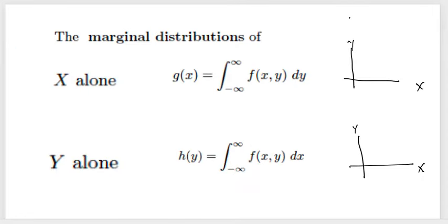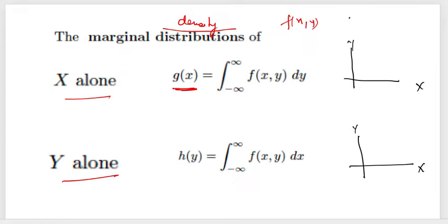The second concept is the marginal distribution — sometimes called the marginal density function — for x alone and y alone. Though we are working with a function of two variables, if we want to write a function of x variable only, we integrate the joint density function over all values of y, from minus infinity to plus infinity or depending upon the region of the question.